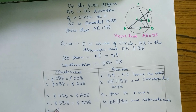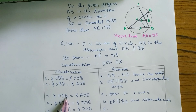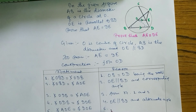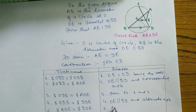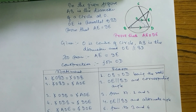Statement 5: Angle AOE is equal to angle DOE. Look at statements 3 and 4 — the left-hand sides are equal, so the right-hand sides are also equal. From statements 3 and 4. After this, we have to show the two triangles are congruent: AOE and DOE.